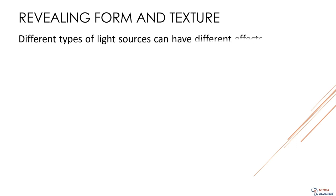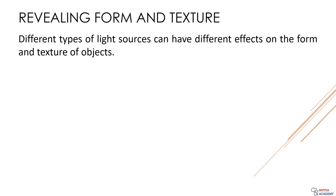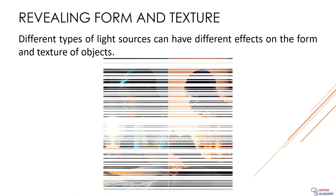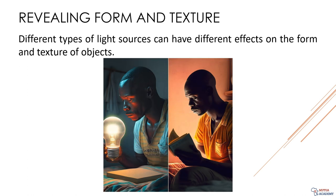Let's talk about the different types of light sources and their effects on form and texture. Incandescent bulbs create warm, diffused light that can help to create a cozy atmosphere, while fluorescent bulbs create a cool, bright light that is perfect for highlighting details. LED bulbs are becoming increasingly popular for their versatility and energy efficiency. Each type of bulb has its own unique effect on the form and texture of objects in your space. So choose accordingly: incandescent for warmth, fluorescent for detail, and LED for maximum flexibility.